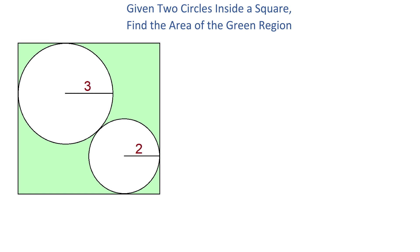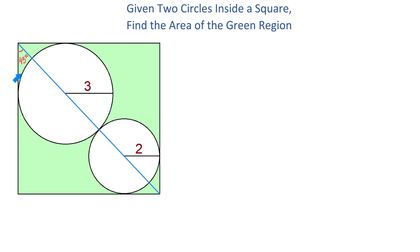We will start by drawing a diagonal for this square. This diagonal splits the right angle into two equal angles, each measuring 45 degrees. The diagonal also passes through each of the centers of these circles, because each of these centers has the same vertical and horizontal distance from a side of the square. In fact, each point on this diagonal has the same vertical and horizontal distance.